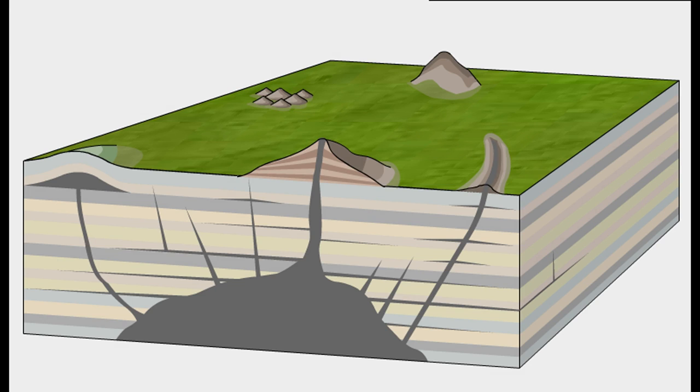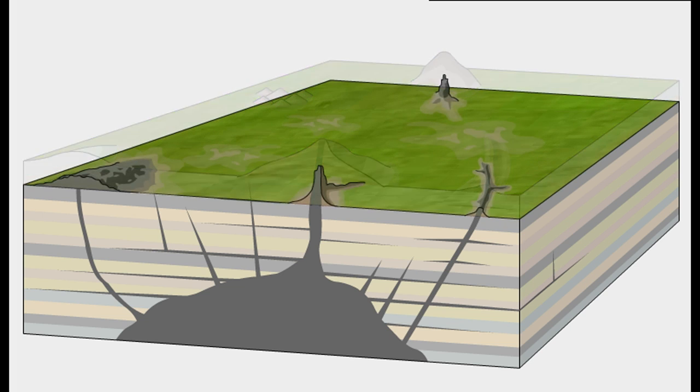Sills, on the other hand, are horizontal intrusions which go between the different layers of rock. Erosion can expose intrusive activity and bring it to the surface.